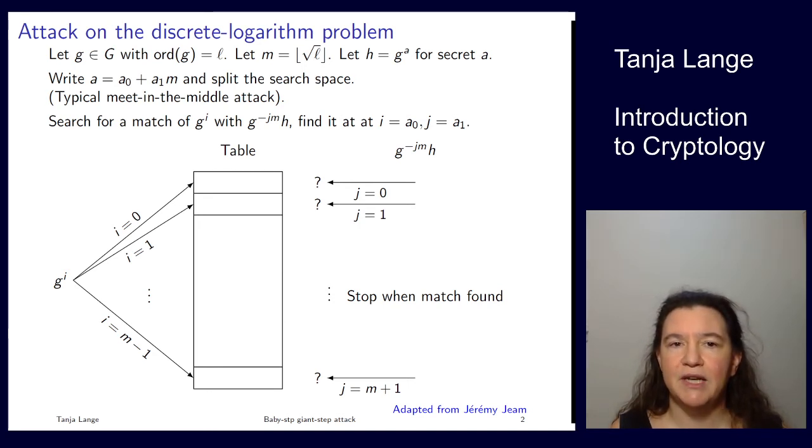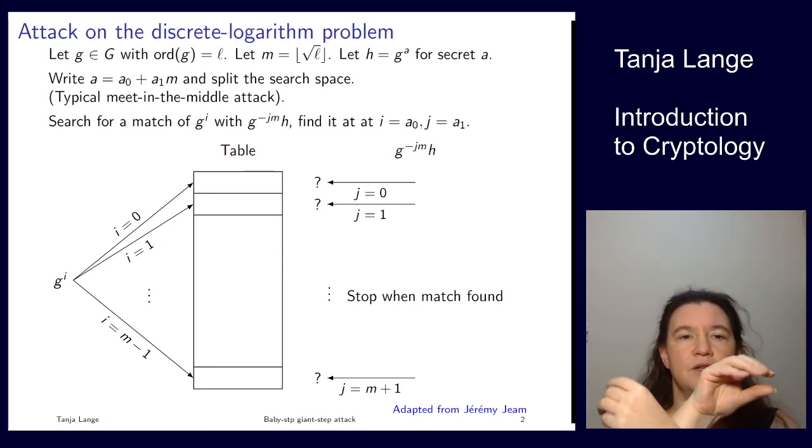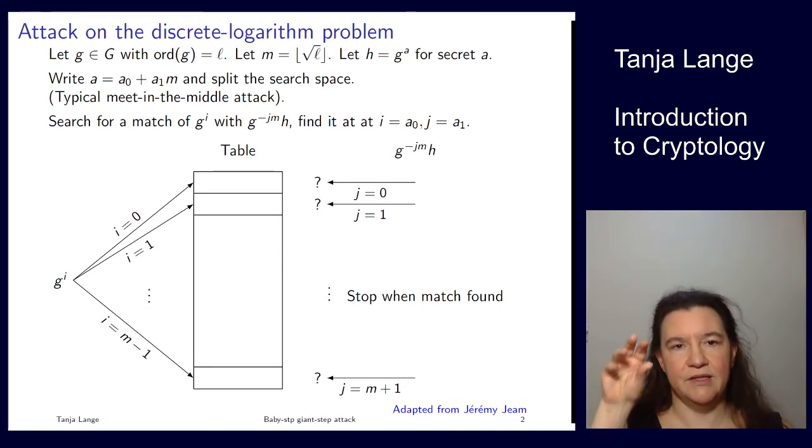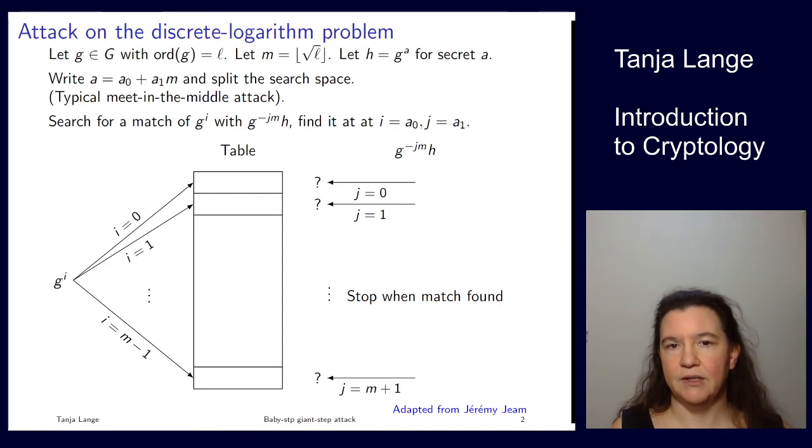In this case, we're trying to find a match of g to the i, and that i will be A0. So we're looking at g to the A0 plus A1 M, and we're splitting it up. We know that h is g to the A0 plus A1 M, and now we bring the A1 M to the other side. So then we're left with g to the A0 on one side, and h times g to the minus A1 M on the other side.